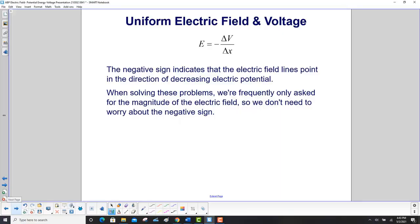We've already shown this graphically, but now we're showing it in an equation. And what does that tell us? The negative sign indicates that the electric field lines point in the direction of decreasing electric potential. When solving these problems, we're frequently only asked for the magnitude of the electric field, so we don't need to worry about the negative sign. But just remember that negative sign tells you which way the electric field is pointing. It's pointing in the direction of decreasing electric potential.